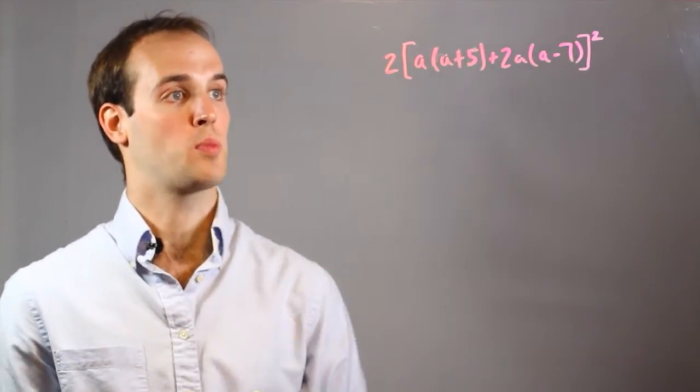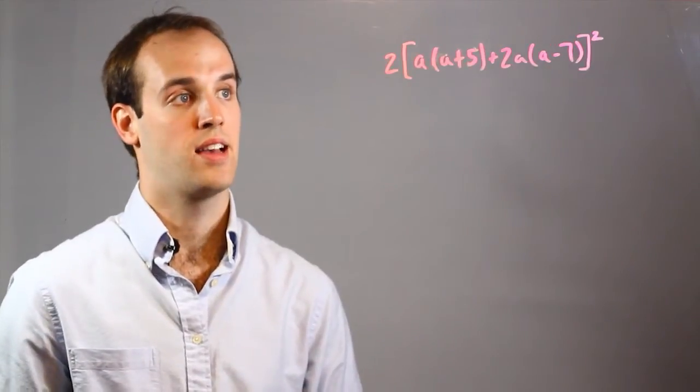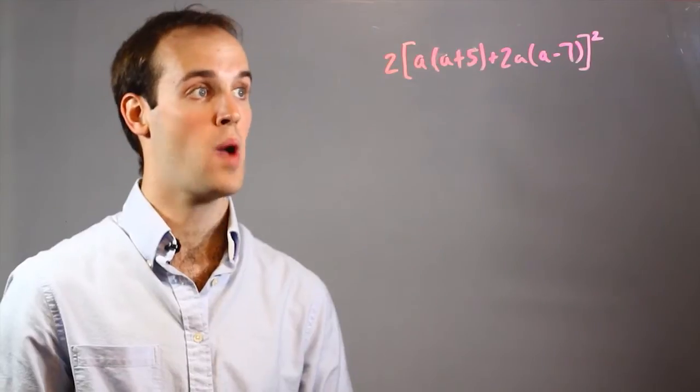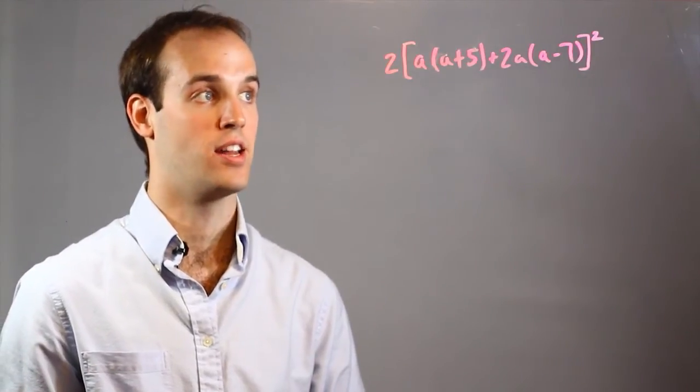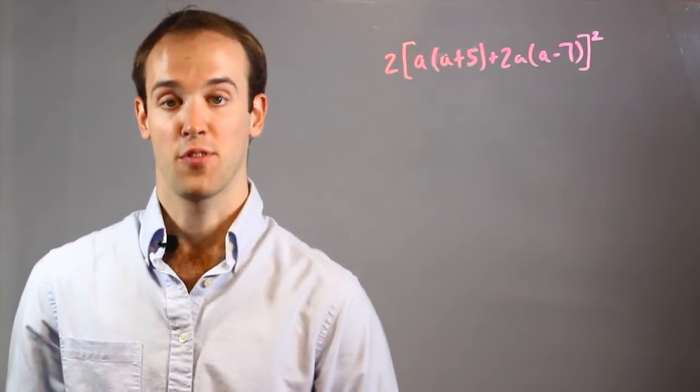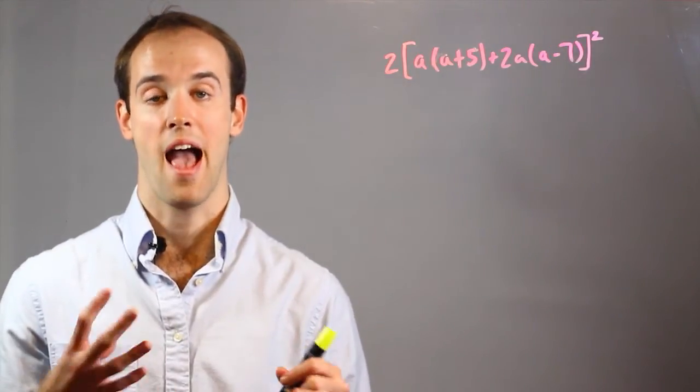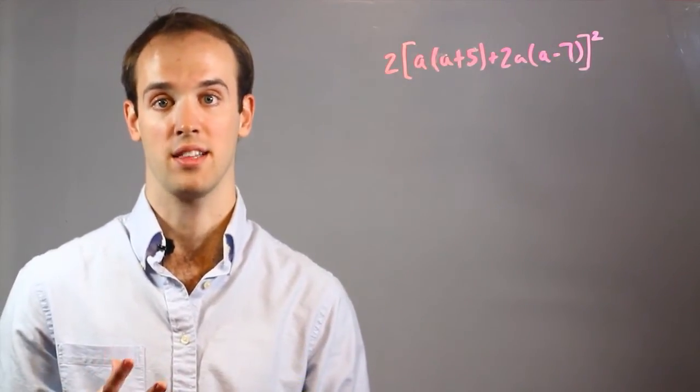So here's our expression: 2[A(8A + 5) + 2A(A - 7)]². The first thing I want to do is the P, which stands for parentheses. I want to simplify everything that I can within the parentheses first.